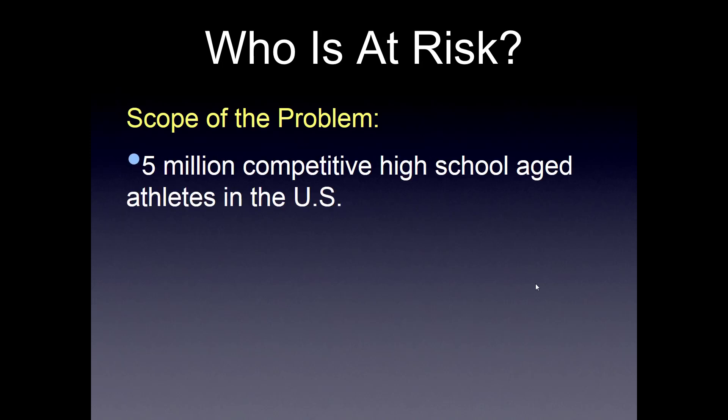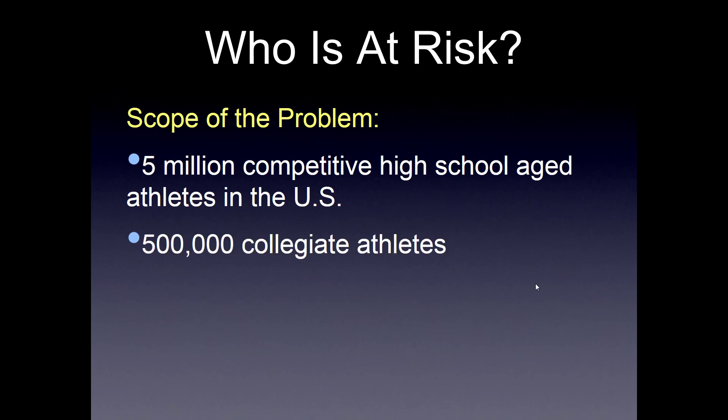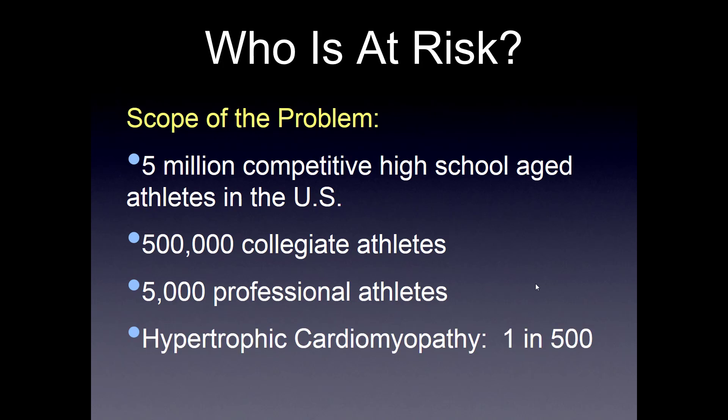We know there are 5 million competitive high school-age athletes in the United States, and there are half a million collegiate athletes, and about 5,000 professional athletes. We know that hypertrophic cardiomyopathy, which is the leading cause of sudden death in athletes, occurs in about 1 in 500.